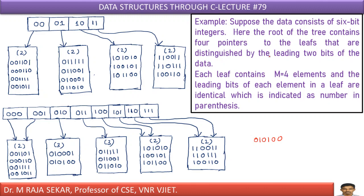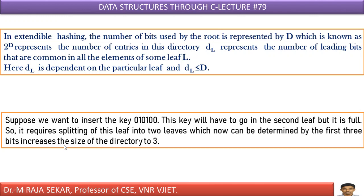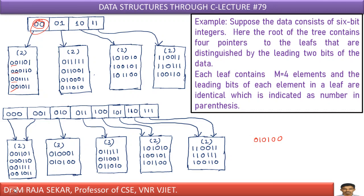The root of the tree contains four pointers to the leaves that are distinguished by the leading two bits of the data. All the elements in this particular leaf have the same leading two bits — 00. That's why this directory entry is 00. All the elements starting with 01 go into the next leaf, those starting with 10 go into the next, and those starting with 11 go into the last leaf. This is the directory.